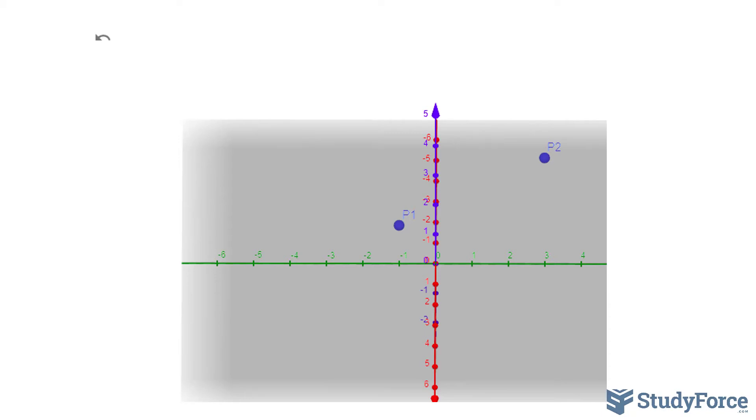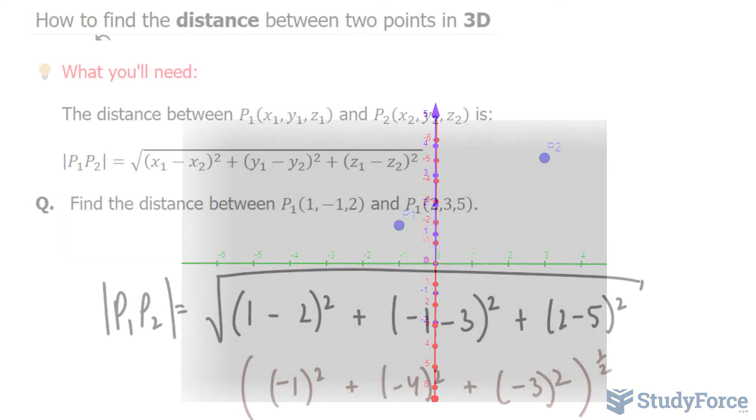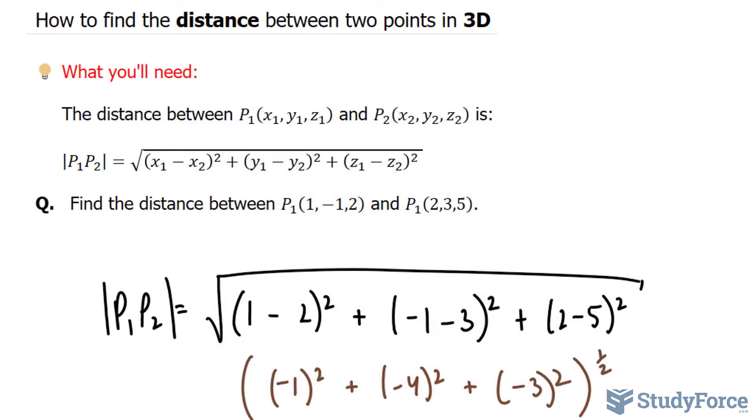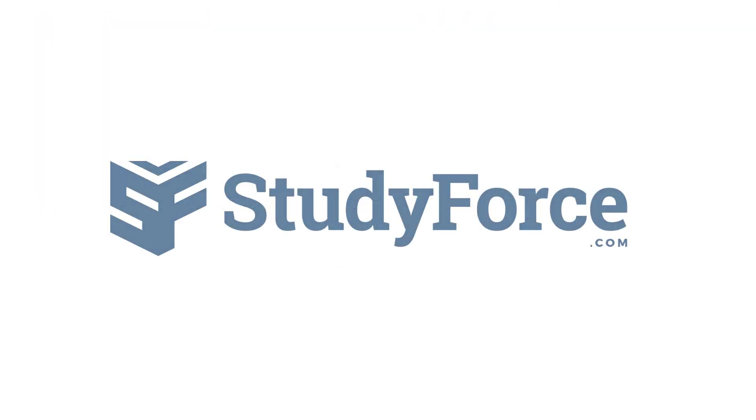And in case you're curious, the square root of 26 is 5.09 units long. And there you have it. That is how to find the distance between two points in 3D.